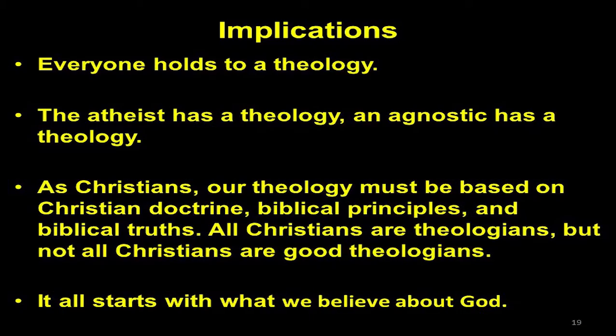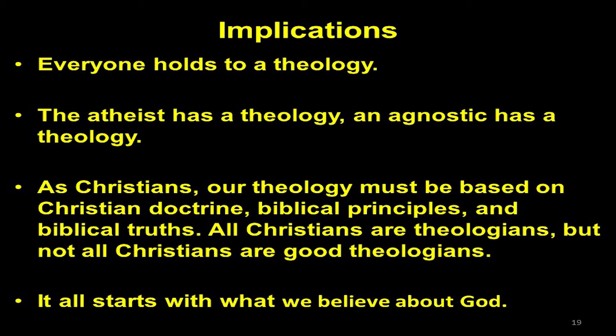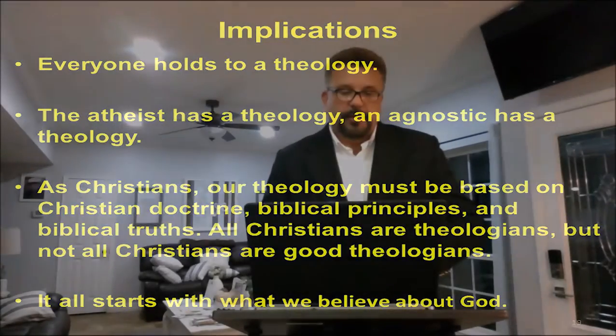Some of the implications from our first class together in an introduction to systematic theology are this: remember, everyone holds to a theology — everyone is a theologian. The atheist has a theology, the agnostic has a theology, and you have a theology. Our goal is to hold and develop a biblical theology that is a systematic theology. As Christians, our theology must be based upon Christian doctrine, biblical principles, and biblical truth. All Christians are theologians, but not all Christians are good theologians. It all starts and begins with what we believe and what we think about God. How big is God? If you want to be a biblical theologian, you have to have a very big view of who God is.